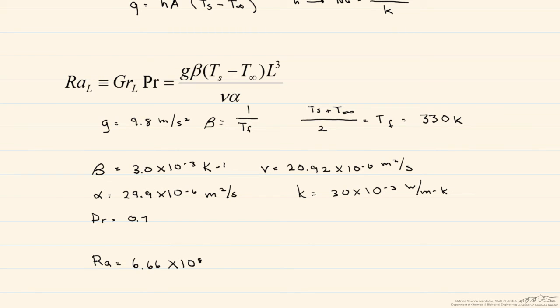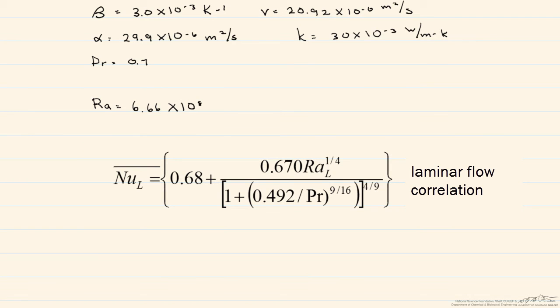So technically this is considered to be laminar flow. We have two possible correlations that we can use to determine the Nusselt number. The first one we'll use is a correlation that's specifically for laminar flow.